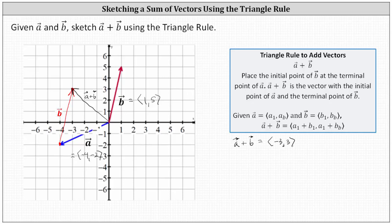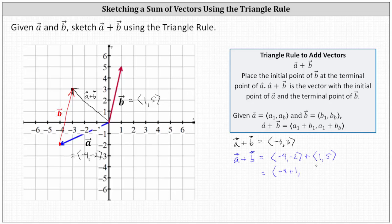Before we go to the online graphing tool, let's also determine the sum of the two vectors by summing the x and y components. Vector a plus vector b is found by adding the x and y components: vector a has an x component of negative four and a y component of negative two, and vector b has an x component of positive one and a y component of positive five. Adding the x components gives negative four plus one, and the y components give negative two plus five — simplifying, we get the vector with x component negative three and y component positive three.